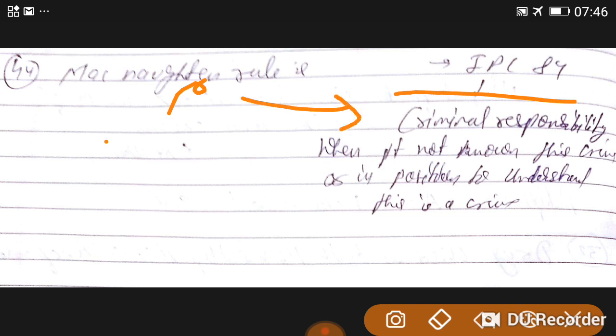But you know what happens here? When a person, not a patient, a person does not know that this is a crime, or he is not in a position to understand that what he was doing is a crime, so he is not punishable.